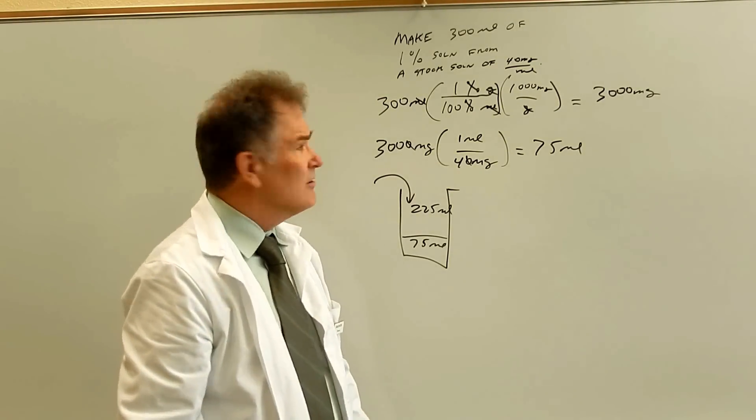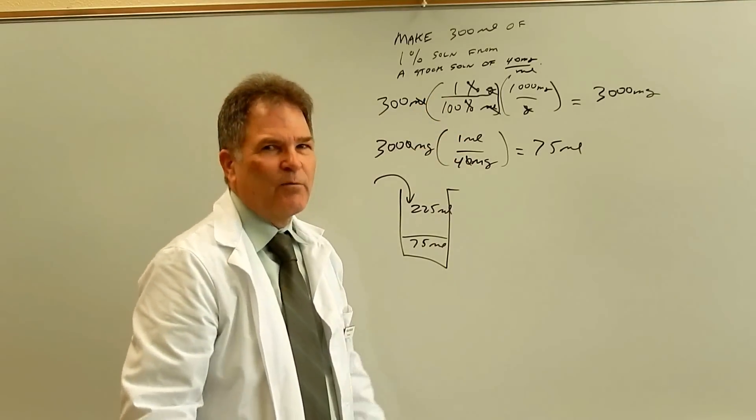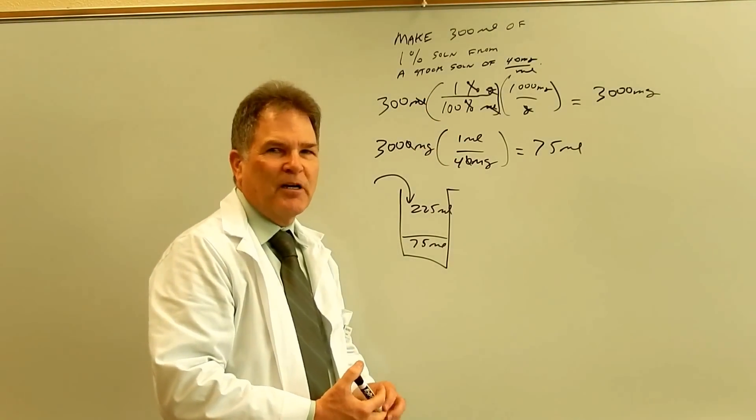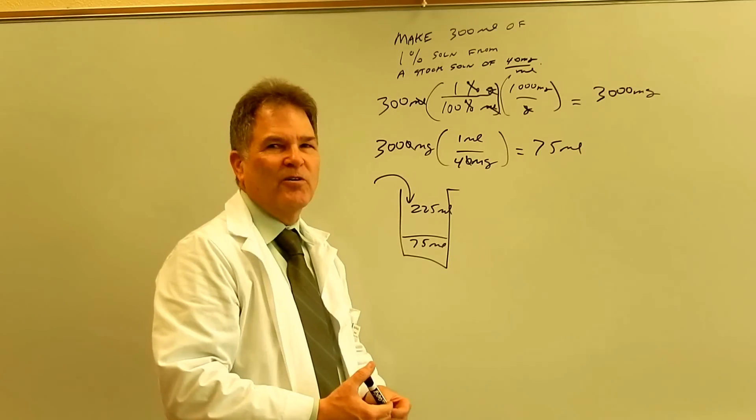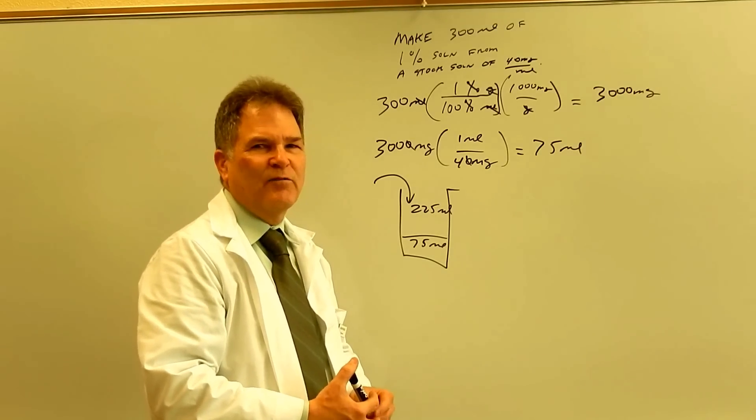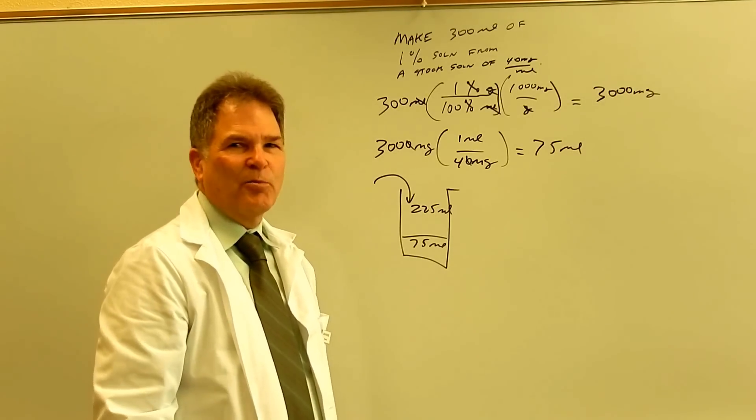So of course, we're going to put in the 75 ml's and we need a total of 300. So that's going to leave us with 225 ml's of diluent. Okay, so not too hard. Once you know how to work with the percent sign, either adding it by multiplying by 100% or removing it by dividing by 100%, they're all pretty easy.